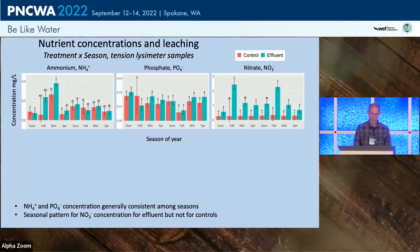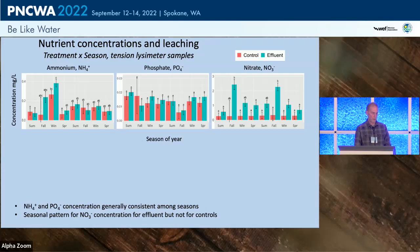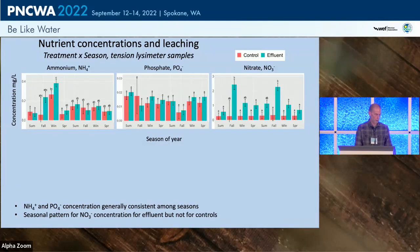For nitrate, we see a consistent seasonal pattern — a peak in concentration during fall, dropping off over winter and spring, then returning the next fall. When looking at all the data together, we do find a statistically significant effect of effluent on nitrate.